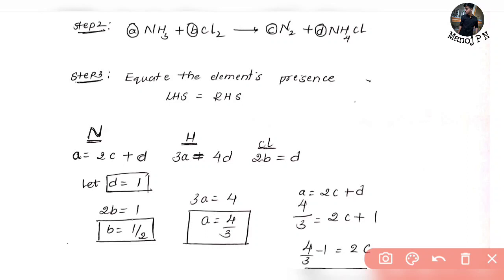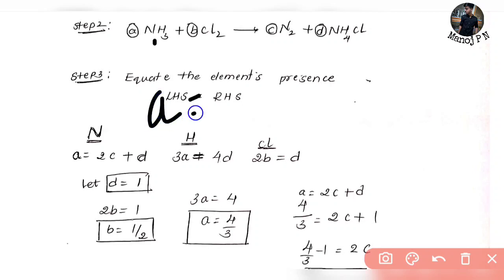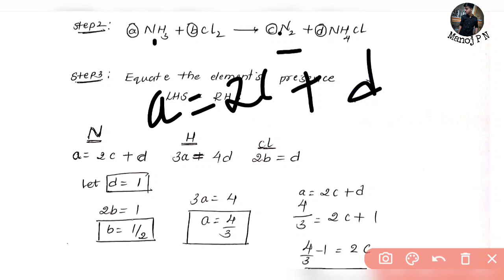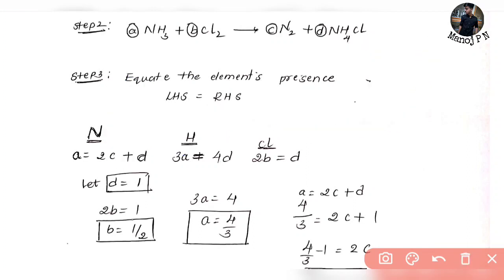First, nitrogen. Nitrogen on LHS: NH3 has 1 nitrogen each, so 1 times A, which is nothing but A. On RHS, N2 has nitrogen 2 times, so 2 into C, plus NH4Cl also has nitrogen — 1 times D. So the nitrogen equation is: A = 2C + D.